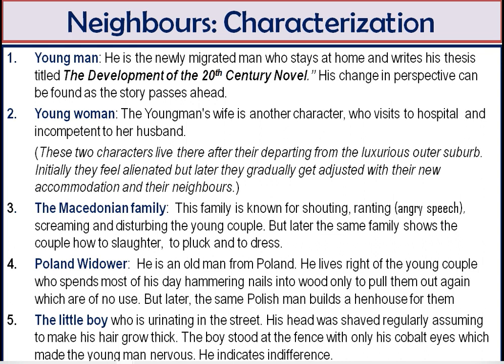About characterization: there are five characters in this story. The first one is the young man — a newly migrated man who stays at home mostly and writes his thesis. The title of the thesis is 'The Development of the 20th Century Novel'. His changes in perspective and thought can be observed as the story moves on.